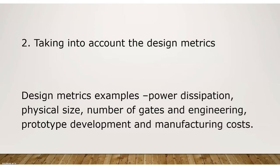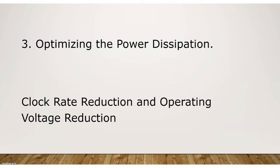The third challenge is optimizing power dissipation. Power consumption should be as minimum as possible — only then can the system produce maximum output and be considered efficient. Methods to reduce power consumption include reducing the clock frequency and reducing the operating voltage.